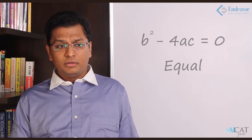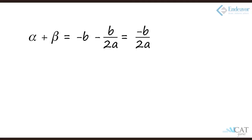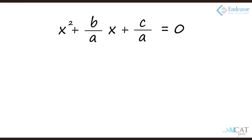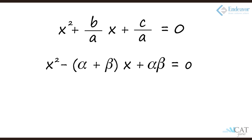Let us look at this from a different angle. The sum of the roots — alpha plus beta — with the determinant cancelling out, gives us -b/a. Similarly, the product of the roots will become c/a. If we go back to the original equation ax² + bx + c = 0 and divide the entire thing by a, it becomes x² + (b/a)x + (c/a) = 0. So the equation can also be written as x² - (sum of roots)x + (product of roots) = 0.